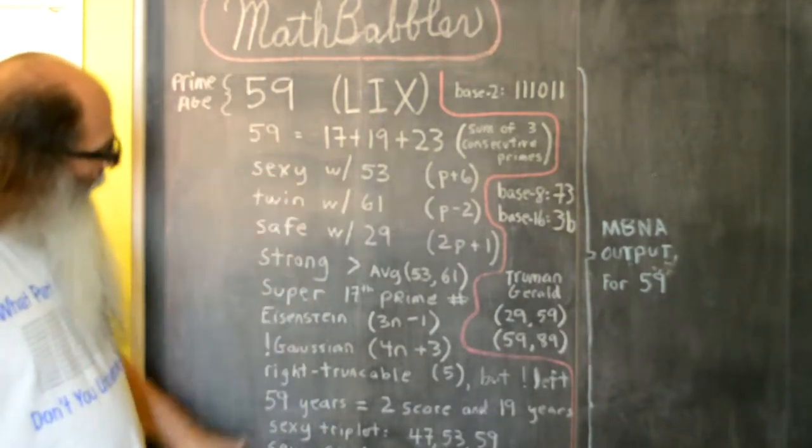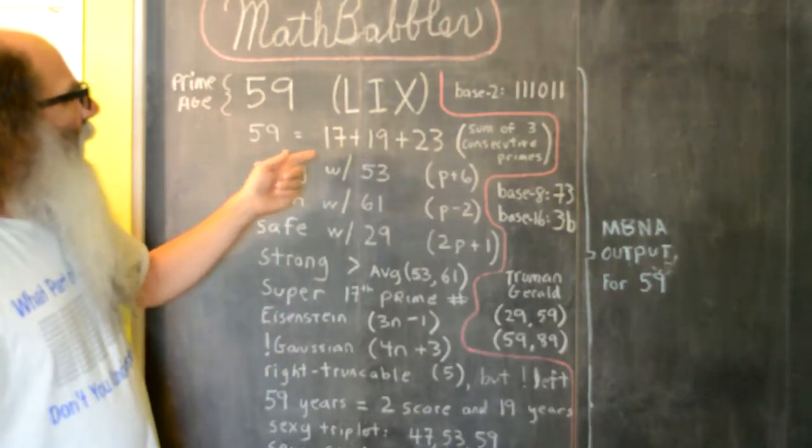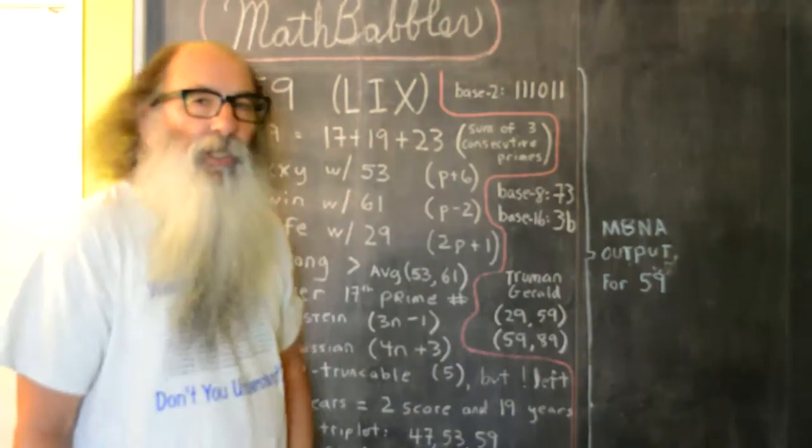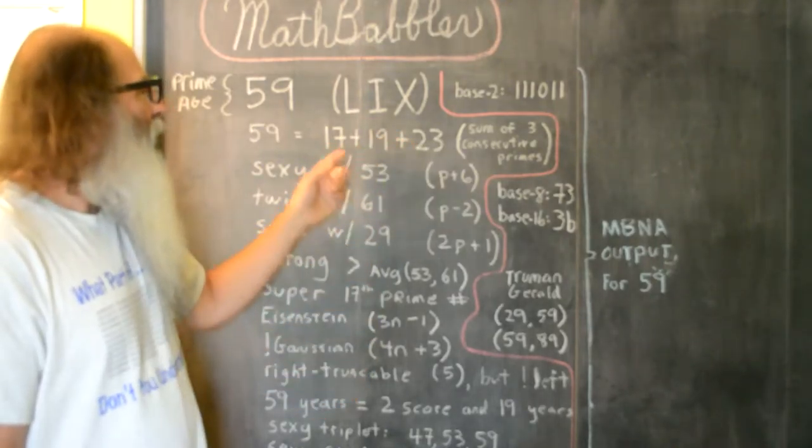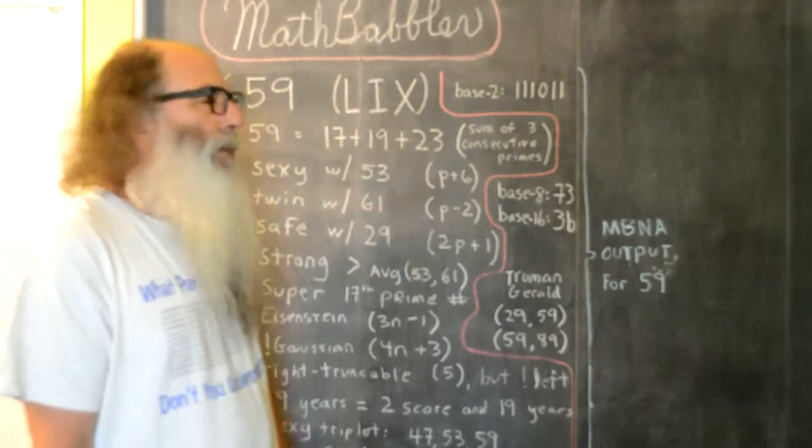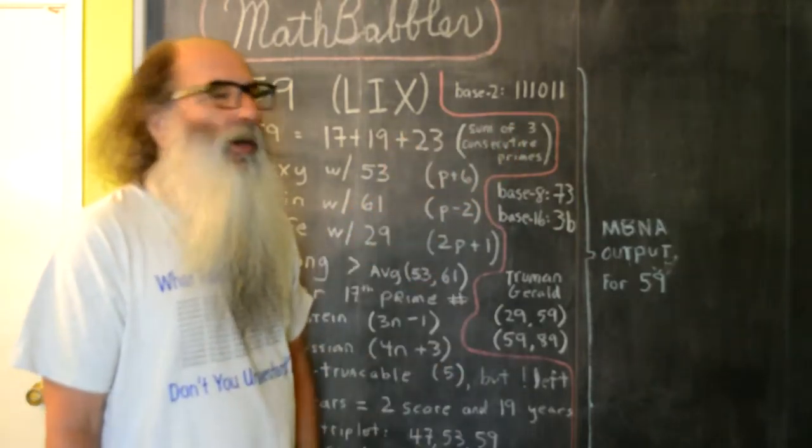And turns out 59 is the sum of three consecutive prime numbers: 17, 19, and 23. All three of those numbers are prime, and it turns out 3 is also prime.